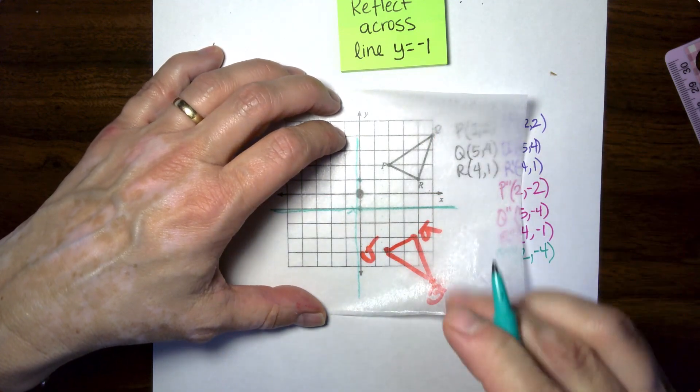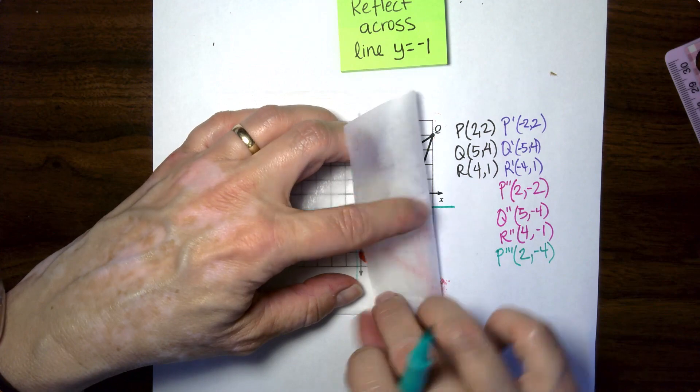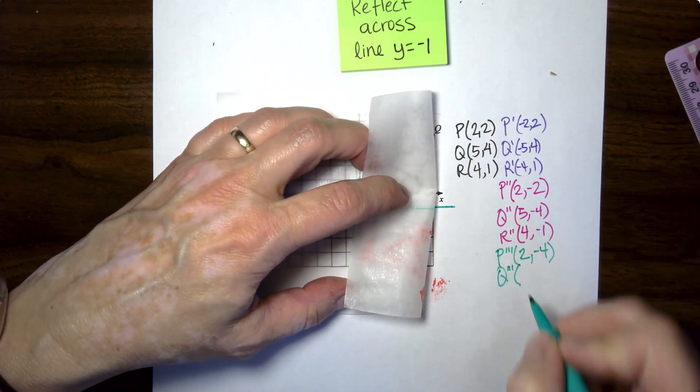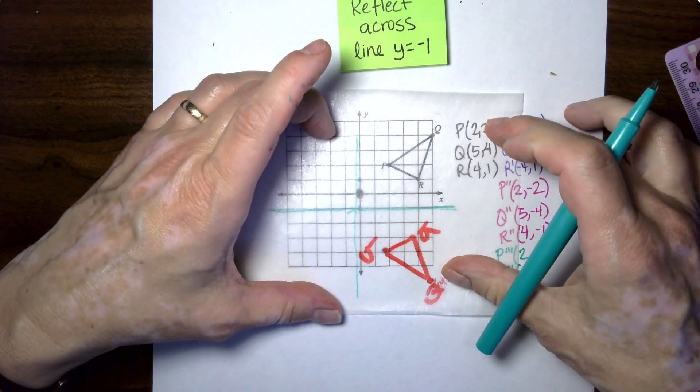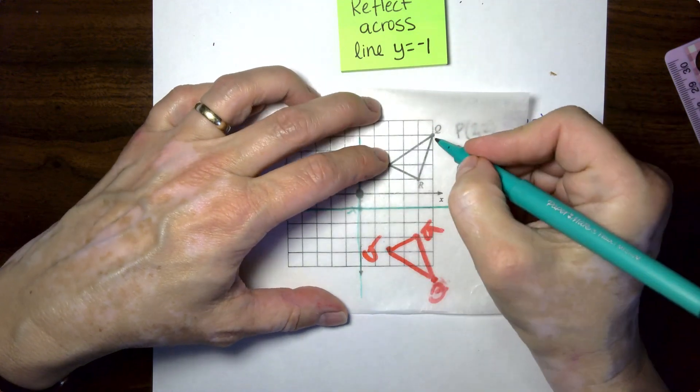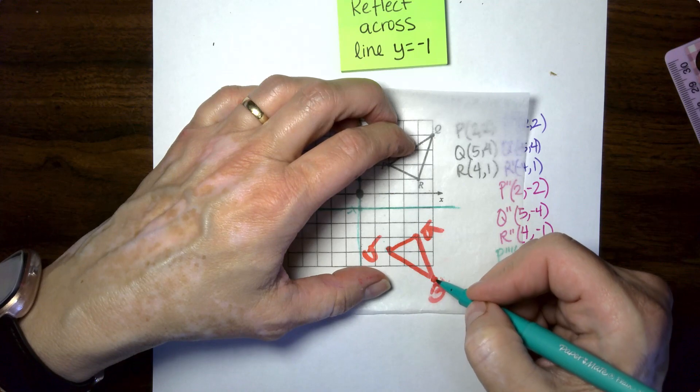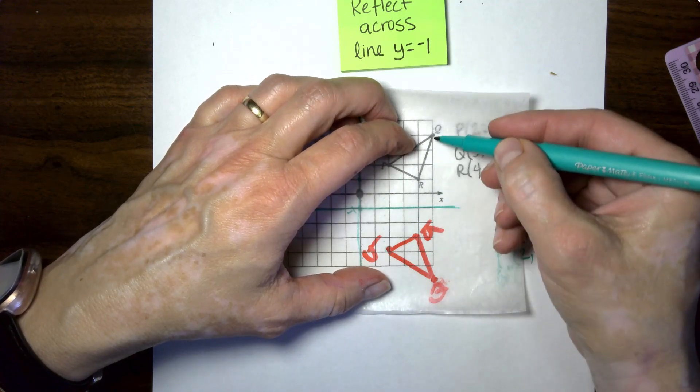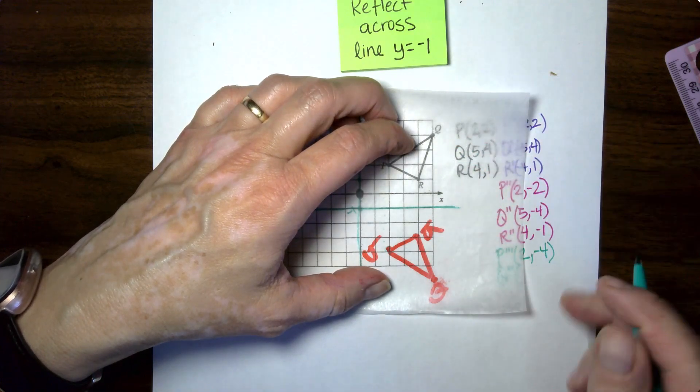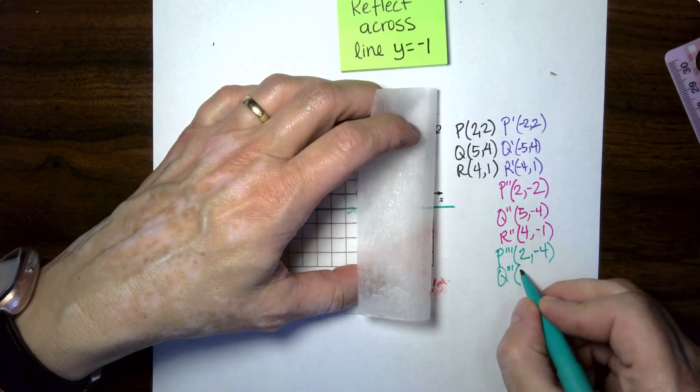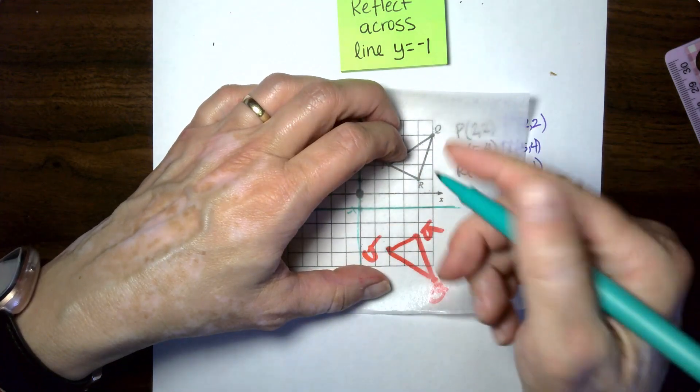It's symmetrical because you are still three boxes up from your line, from your reflection line and three boxes down from your reflection line. But the actual coordinate is four boxes down from there. Remember this was at Y equals negative one. So the whole mirror dropped down one.